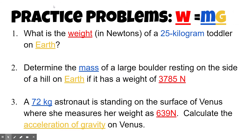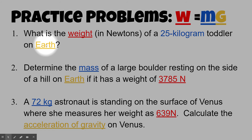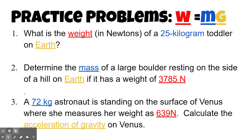We're going to do three practice problems. Weight equals mass times gravity. To determine which is weight, mass, and gravity in each problem: in number one, what is the weight in newtons of a 25-kilogram toddler on Earth? The 25 kilograms is our mass, and we're looking for weight. 'On Earth' tells us we're going to use the acceleration due to gravity here on Earth, which is 9.8 meters per second squared.